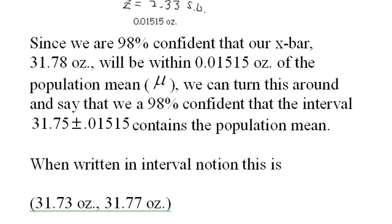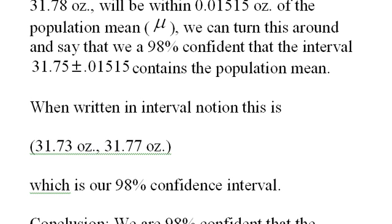When written in interval notation, it looks like this: 31.73 ounces, 31.77 ounces, which is our 98% confidence interval.